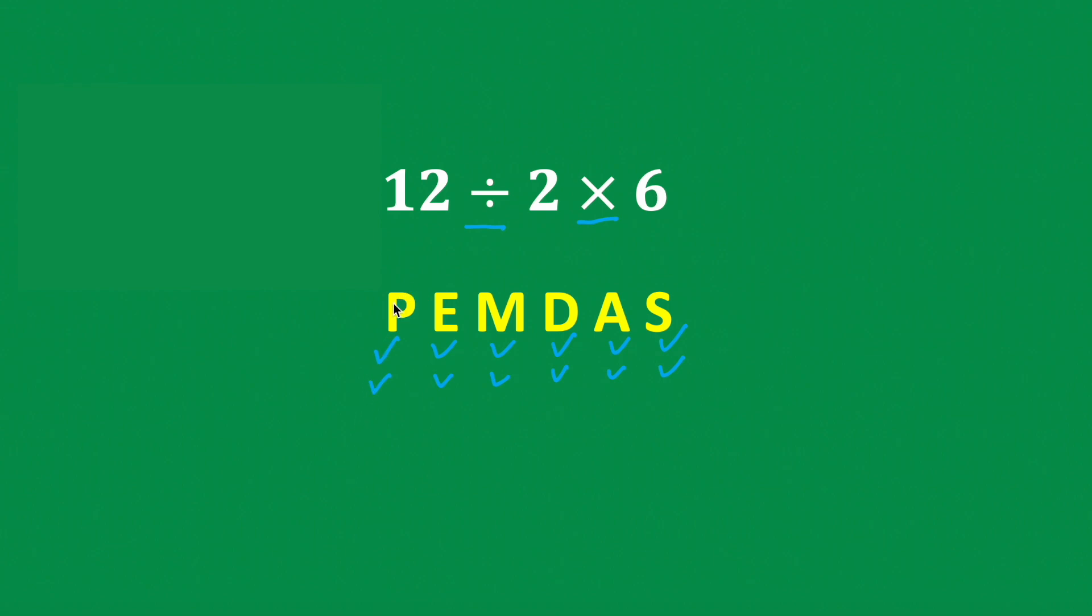And what they stand for is parentheses, exponents, multiplication, division, addition, and subtraction. So this is the order in which we normally do things left to right, starting with parentheses, meaning grouping symbols, like the parentheses or brackets. So if we see those, we do them first.